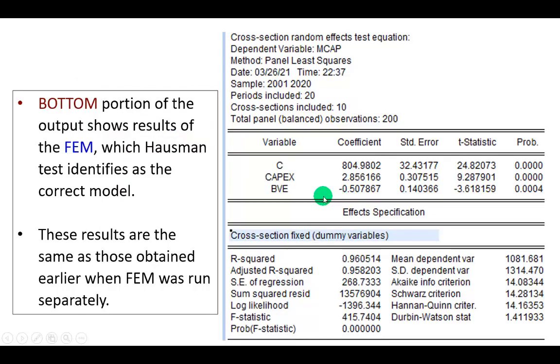And finally, the bottom portion shows results of the fixed effects model, which the Hausman test identifies as the correct model, which we've seen before.